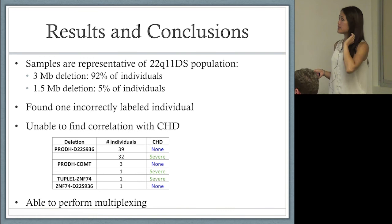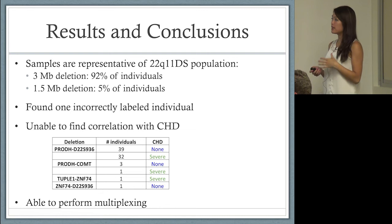Our samples are representative of the 22Q population. We got a huge majority having the large three megabase deletion and about 5% having the small 1.5 megabase deletion. We found one incorrectly labeled individual—in our database we had the individual labeled as 22Q, but using DDPCR we found it was actually a TD individual. This demonstrates the robustness of this system.